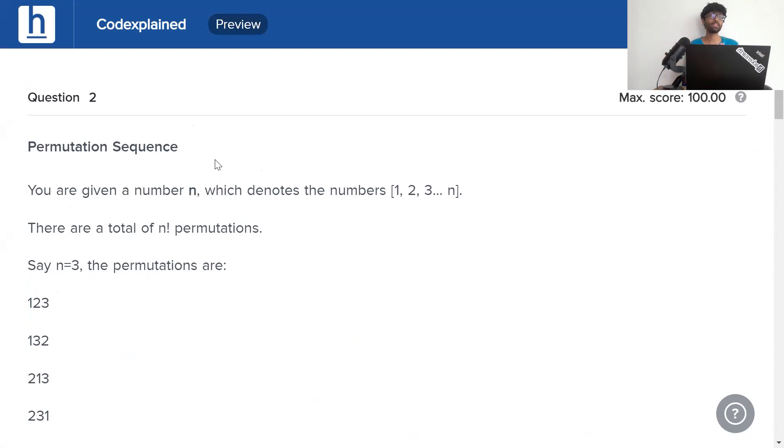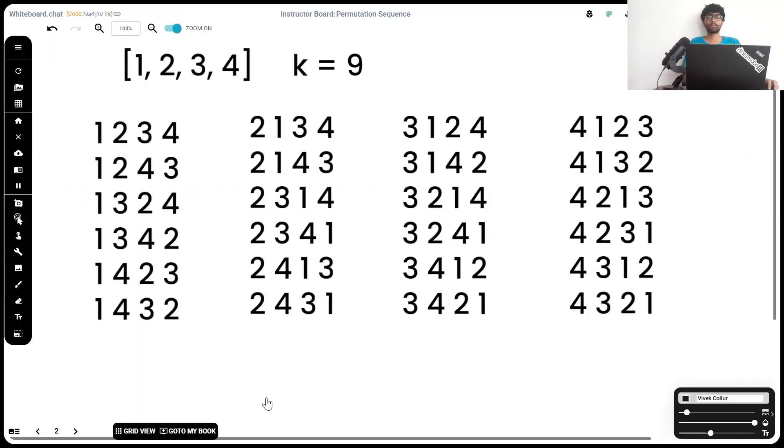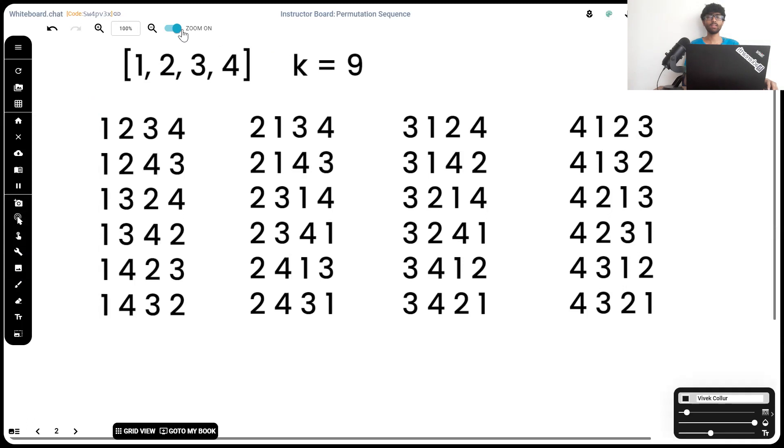Once you're done, get back and see the hint, or you can skip straight to the solution. So guys, here let's have a look at a different example, at a larger example so we get a better picture about the problem. Let's say n was 4 instead of 3. Now we're going to have a lot more permutations—we're going to have 4 factorial, that is 24 permutations.